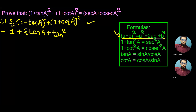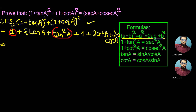Similarly, the second bracket follows the same formula. We write 1² = 1, plus 2 × 1 × cot a = 2 cot a in place of 2ab, and finally cot² a in place of b². Now we convert 1 + tan² a into sec² a using the basic trigonometric identity: 1 + tan² a = sec² a.